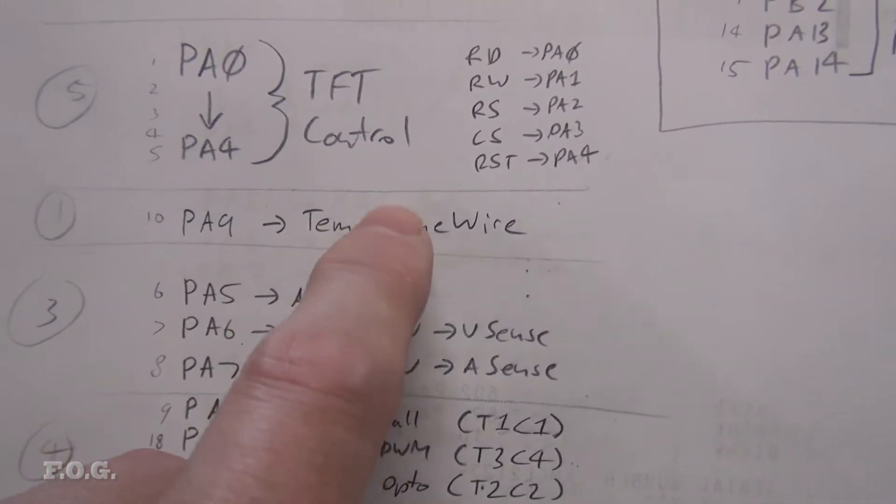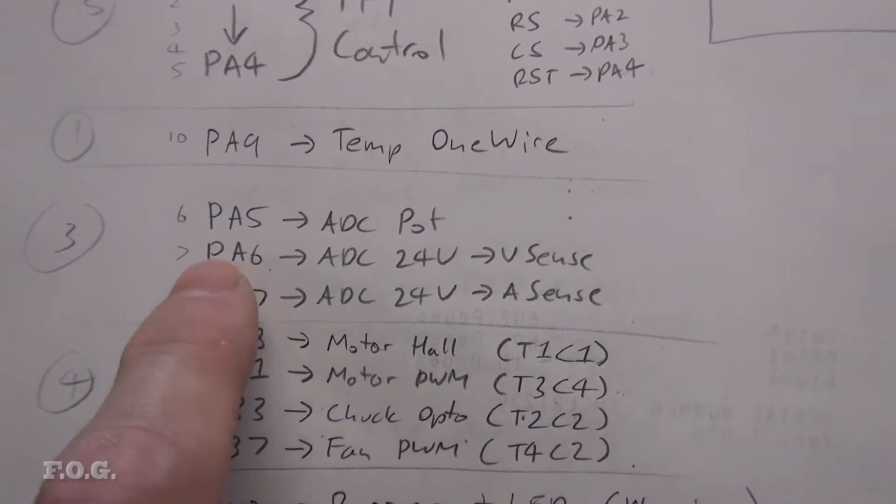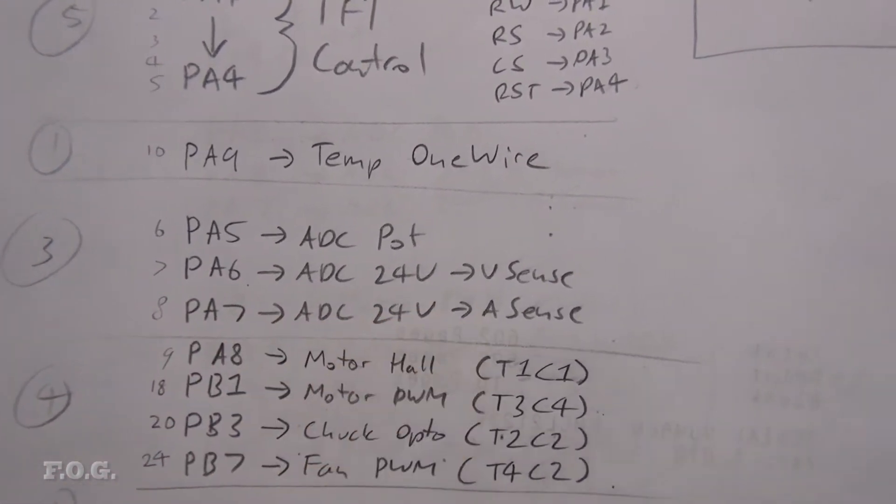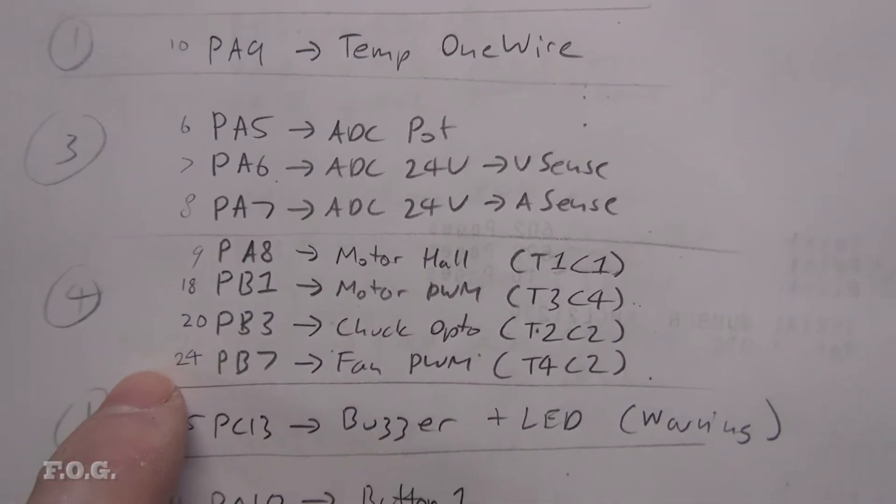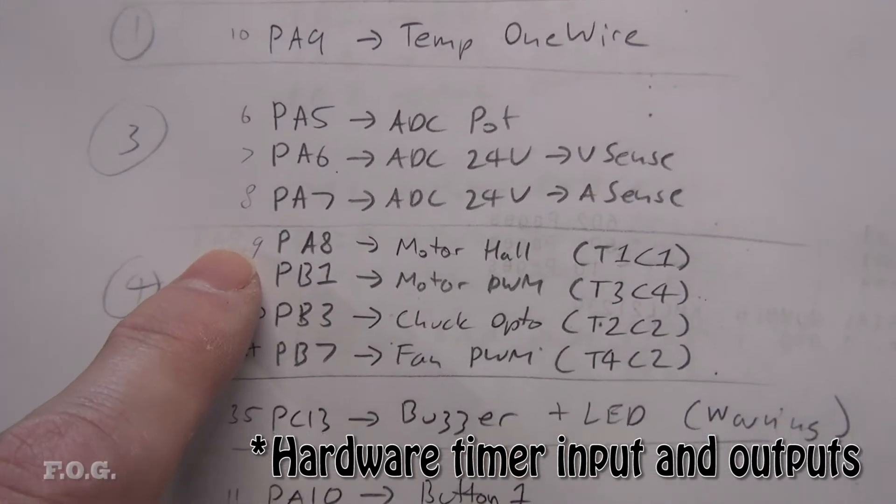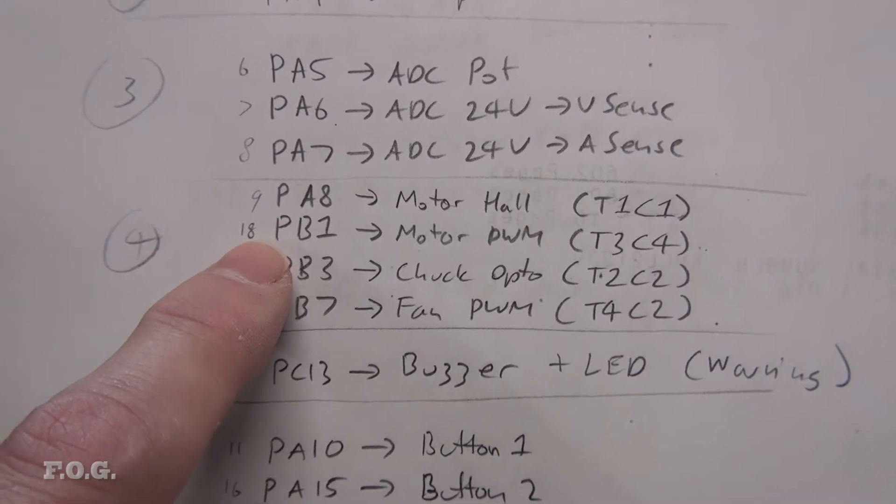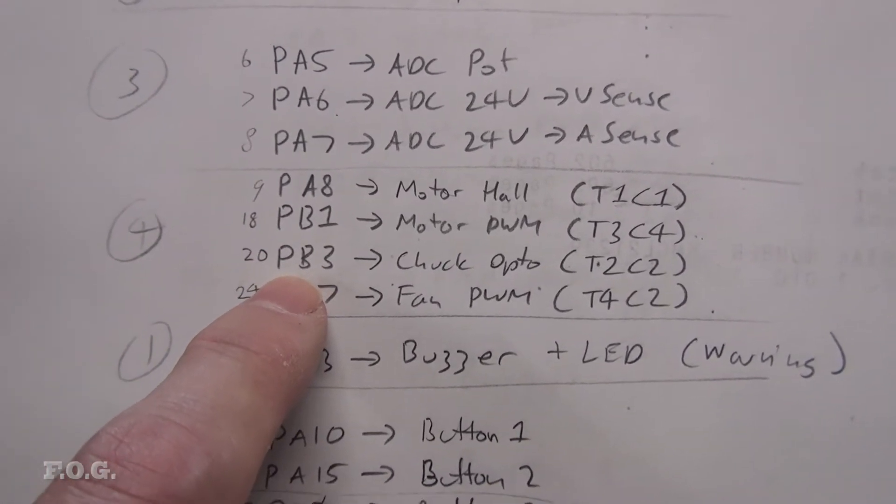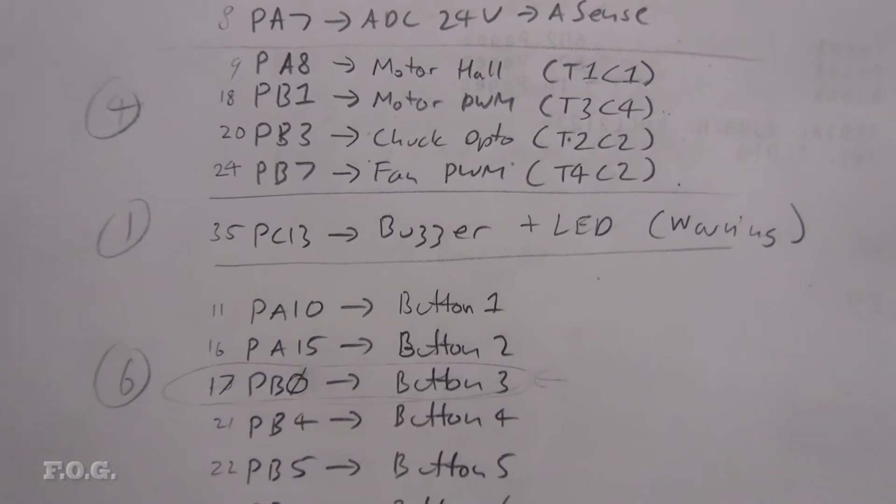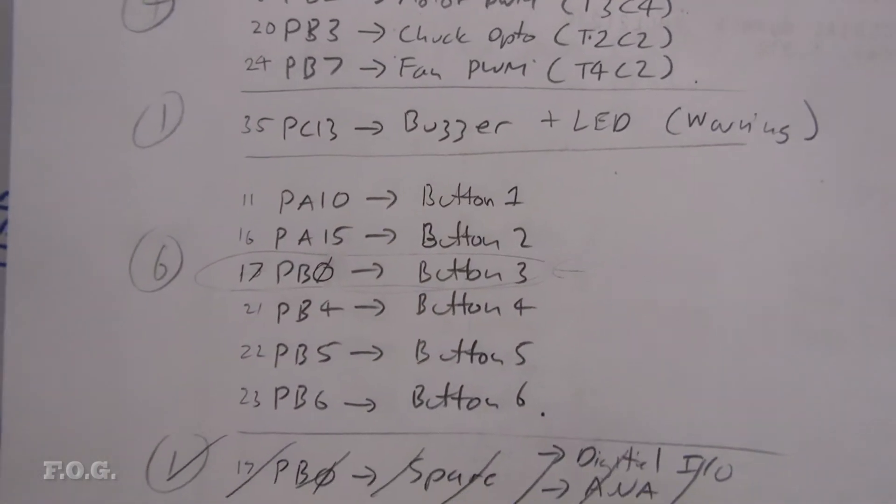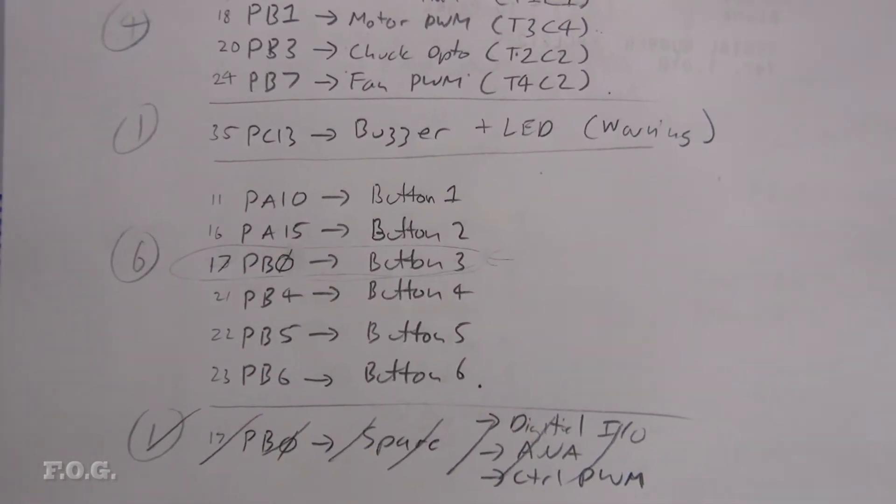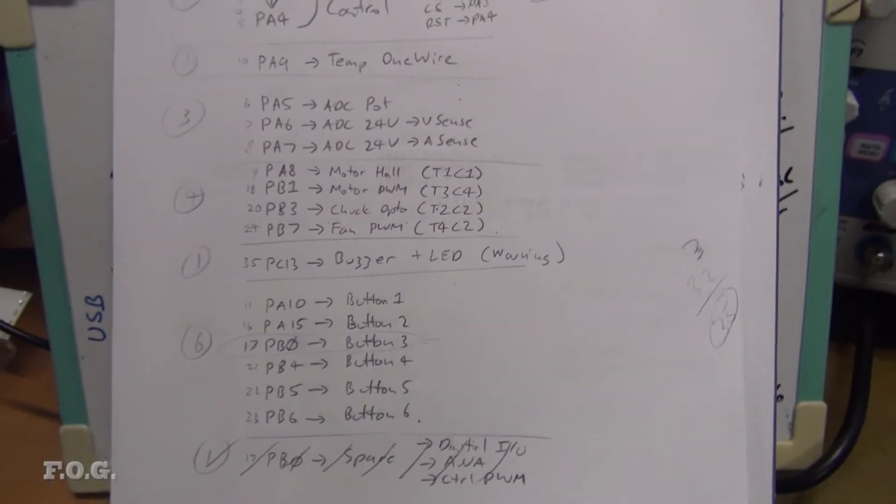It's now using PB8 through PB15 for the data and PA0 to PA4 for the TFT control. And at the same time I also figured out the rest of the plan for where I wanted what. For example, PA9 was the one wire for the temperature. That stays the same. The three analog inputs that I'm going to use is for the ADC for the pot for controlling the speed or settings and PA6 PA7 for the 24 volt VA sense or VI sense whichever you want to call it. And then the timer based inputs PA8 for the motor hall sensing and PB1 for the motor PWM output control. PB3 for the Chuck Opto speed sensing and PB7 for the fans PWM control. I'm also going to add a buzzer later on. PC13 seems like a good candidate for that and about six different press buttons, which I'm going to have a single button on every port. I want to keep the chip count as low as possible.